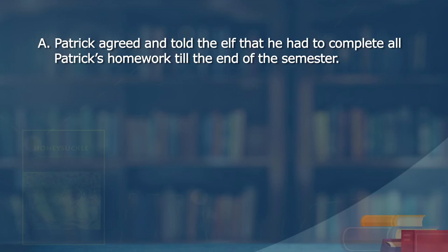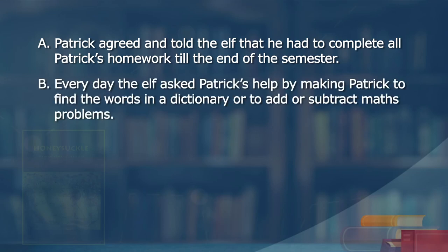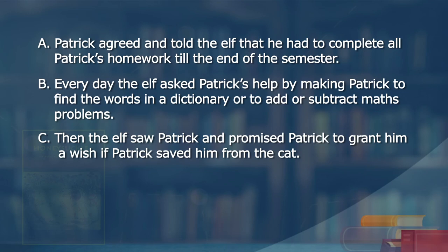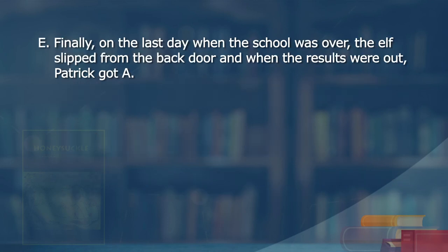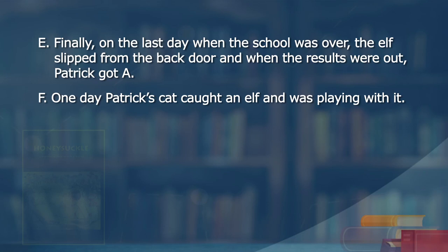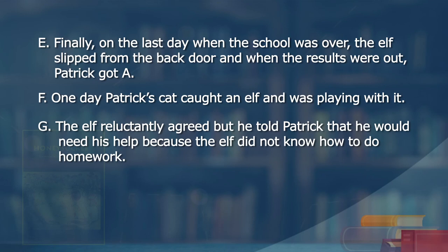Here are the jumbled sentences: (A) Patrick agreed and told the elf that he had to complete all Patrick's homework till the end of the semester. (B) Every day the elf asked Patrick's help by making Patrick find words in a dictionary or add or subtract mathematics problems. (C) Then the elf saw Patrick and promised to grant him a wish if Patrick saved him from the cat. (D) Patrick did not want to complete his homework because he hated homework and liked to play sports. (E) Finally on the last day when school was over, the elf slipped from the back door and Patrick got his A's. (F) One day Patrick's cat caught an elf and was playing with it. (G) The elf reluctantly agreed but told Patrick he would need his help because the elf did not know how to do homework.